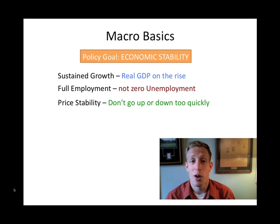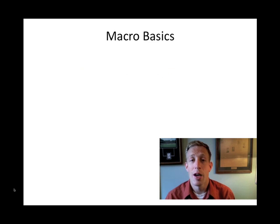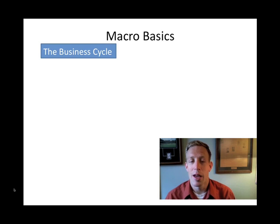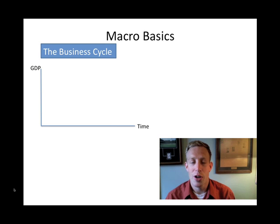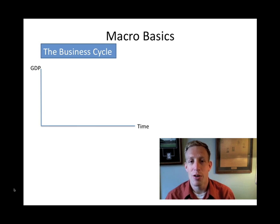One of the ways we judge this in macroeconomics is through a tool called the business cycle. The business cycle shows the normal ups and downs in an economy — it goes up sometimes, it goes down sometimes — and essentially what we're looking at is how the economy fluctuates. Take a look at the graph here. On the horizontal axis we have time, and on the vertical axis we have GDP. Then we draw a curve that goes up and down repeatedly, just like the economy.